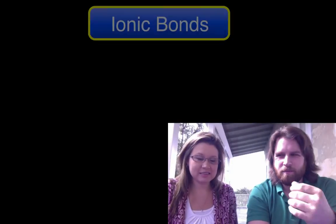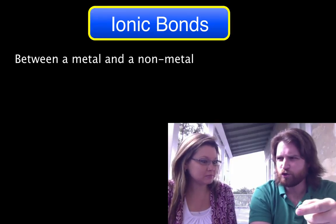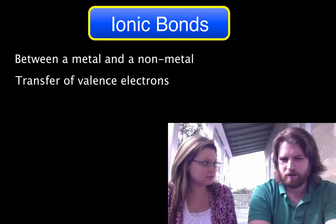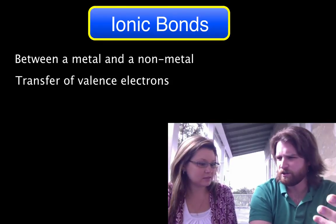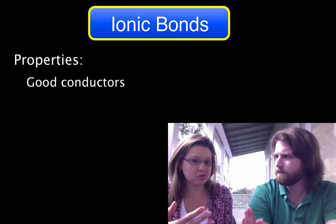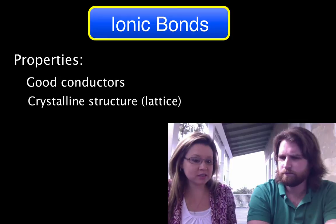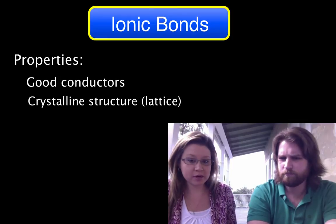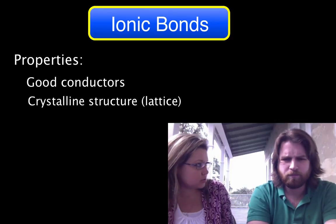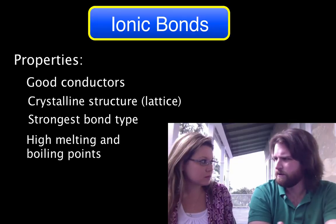So that was ionic bonds, and if I'm understanding correctly, it is between a metal and a non-metal, and it's where valence electrons are transferred from a metal to a non-metal, right? Exactly. So what are some properties of ionic bonds that I should know about? Ionic bonds form ions, which means that they can conduct electricity — they have charges, so you can move electricity through. They also form crystalline lattice structures, which are brittle, so they break easily. They're pretty strong too, so they have high melting points and boiling points.